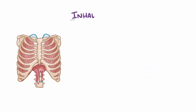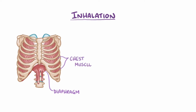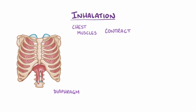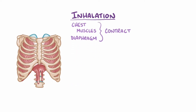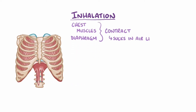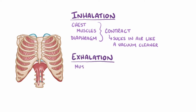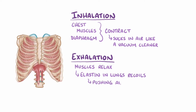Normally during an inhalation, the diaphragm and chest wall muscles contract to pull open the chest, and that sucks in air like a vacuum cleaner. Then during an exhalation the muscles relax, allowing the elastin in the lungs to recoil, pulling the lungs back to their normal size and pushing that air out.